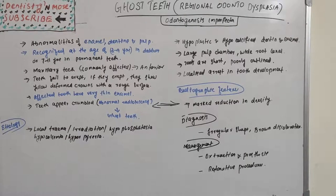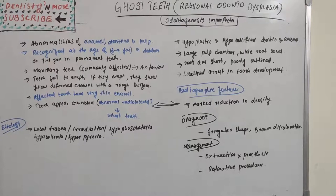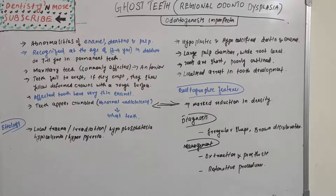The crown is rough because of hypomineralized or poorly mineralized enamel and dentine, making these teeth very susceptible to staining and deformation. There will be a rough surface and yellow-stained, deformed crowns. Sometimes the teeth won't erupt at all, and if they do, they appear this way.